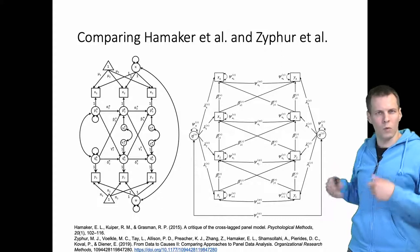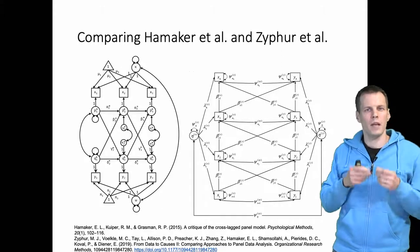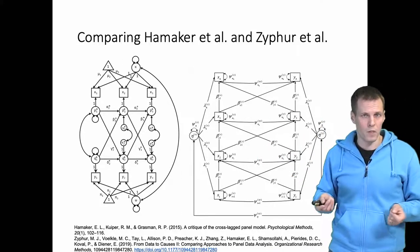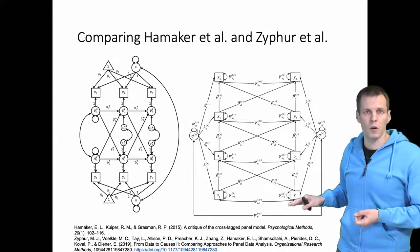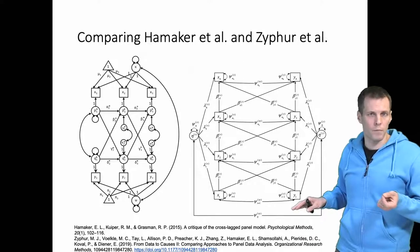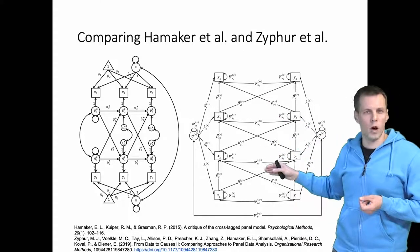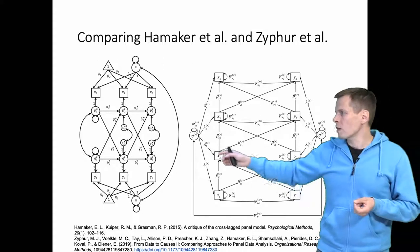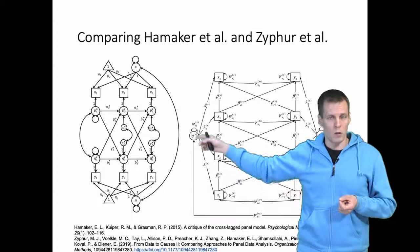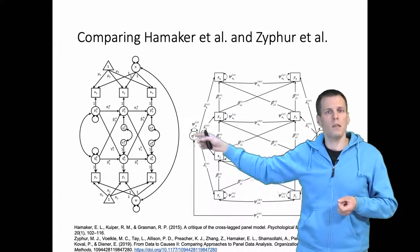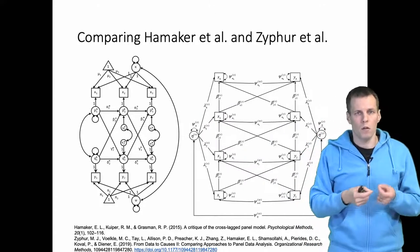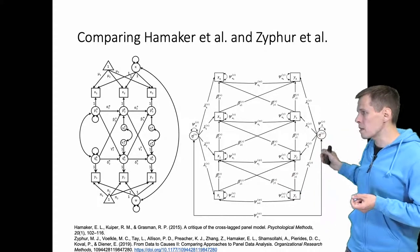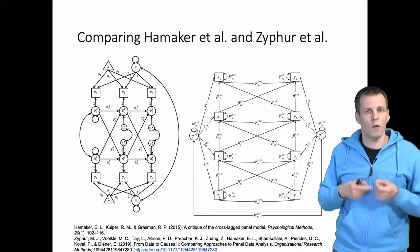Zyphur's model models the means of these Y variables and means of these X variables as predictors of Y and X variables. This is the correlated random effects approach which gives you the contextual effect. Both of these cross-lagged paths in both models are the within effects. Where is the between effect? Where is the contextual effect? The correlation between these two random effects here or latent variables here corresponds to the between correlation. If we switch that correlation to be a regression path, it gives us the between effect. Here, if we switch this correlation to be a regression path, it gives us the contextual effect.